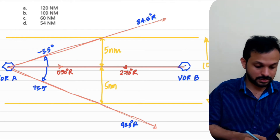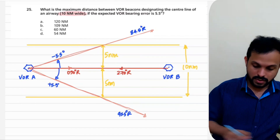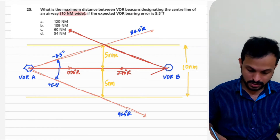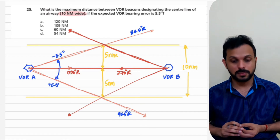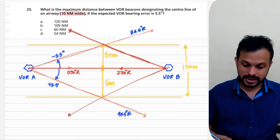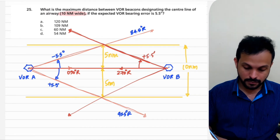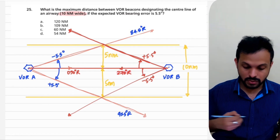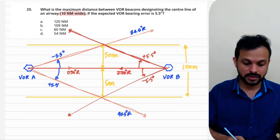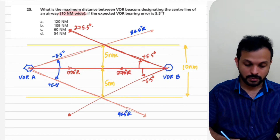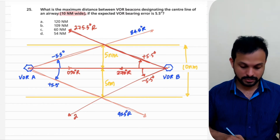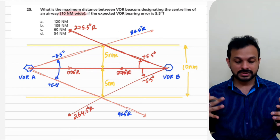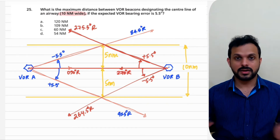Similarly, let's define the radials from VOR B. These are the other two radials beyond which you'll be moving out of the airway — again, plus 5.5 degrees and minus 5.5 degrees of error. Since you're coming inbound on the 270 radial, these boundary radials would be 270 plus 5.5 = 275.5 degrees, and 270 minus 5.5 = 264.5 degrees. The intersection of these radials defines the 5 nautical mile boundary on either side of the airway.